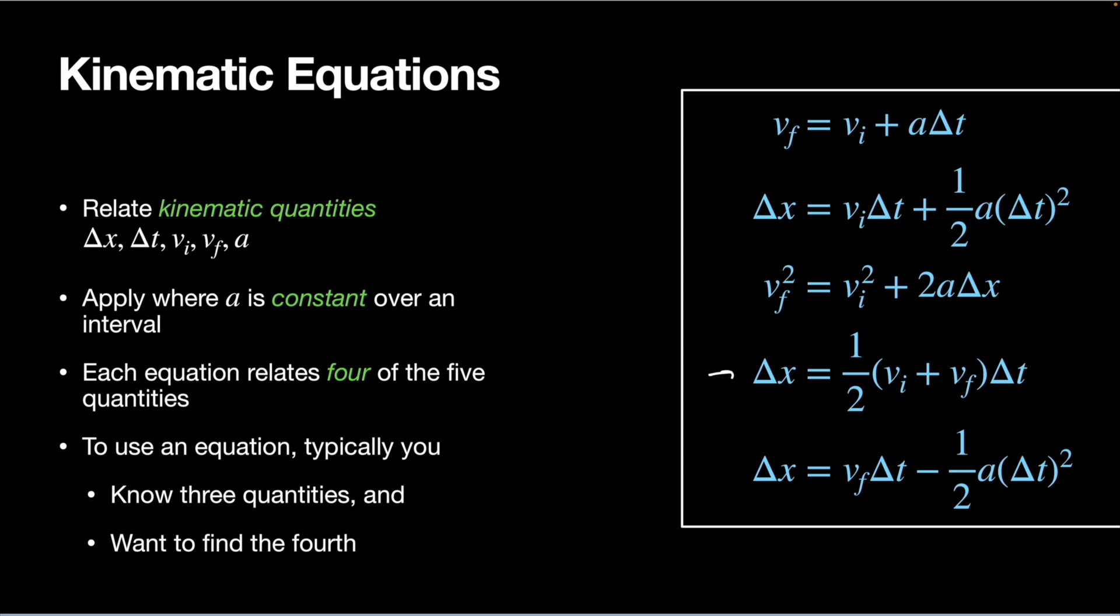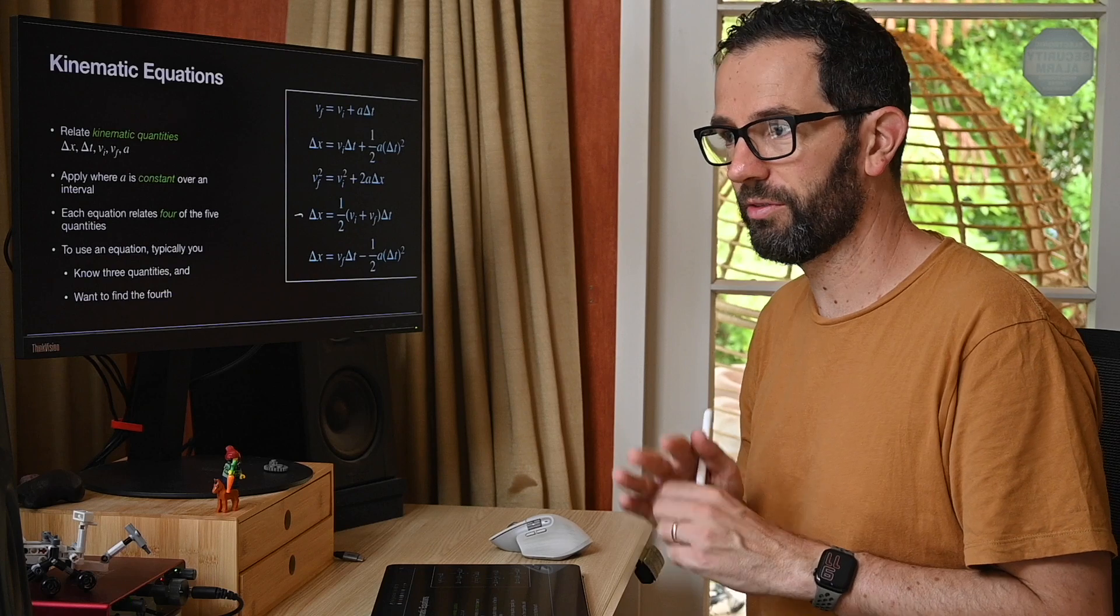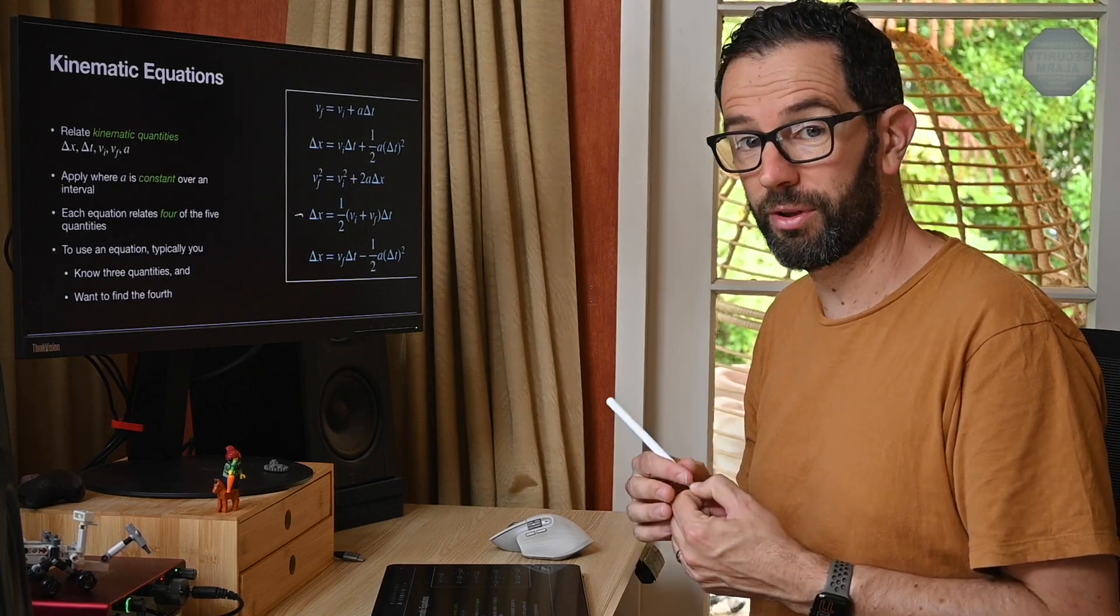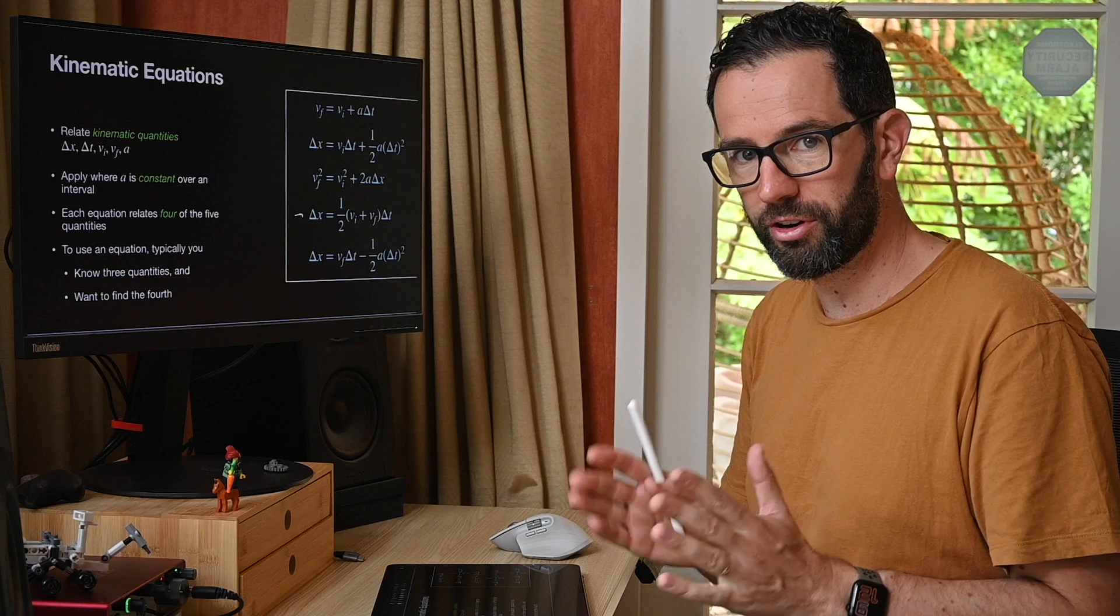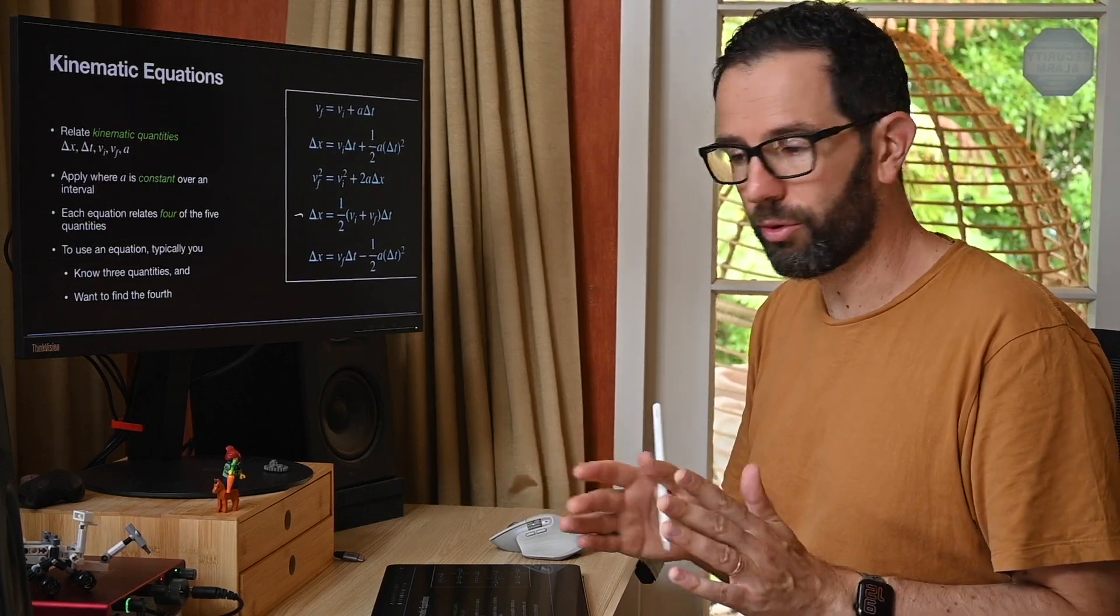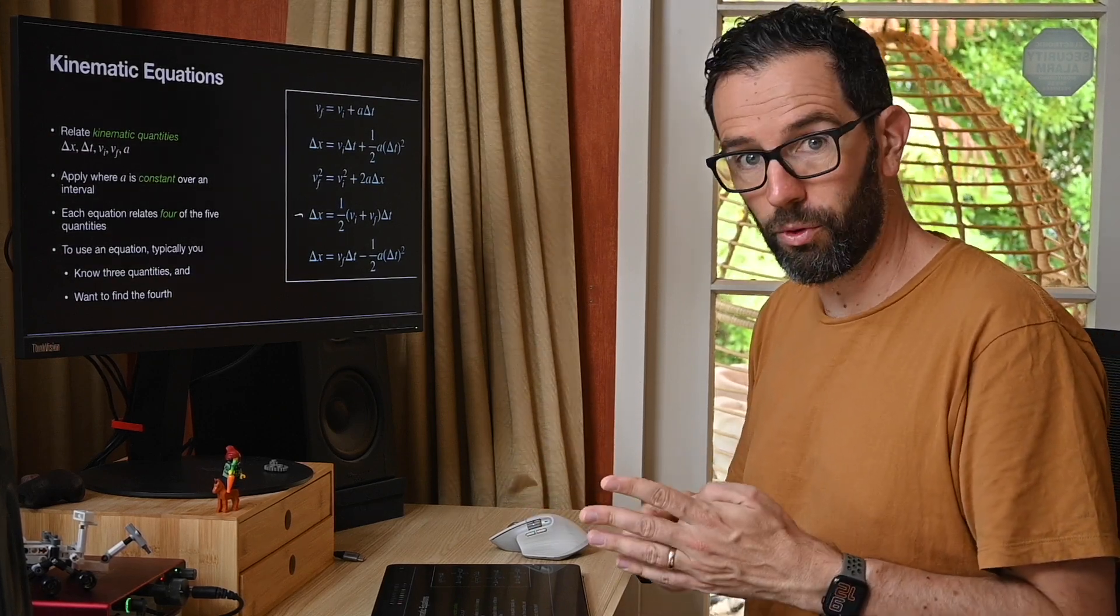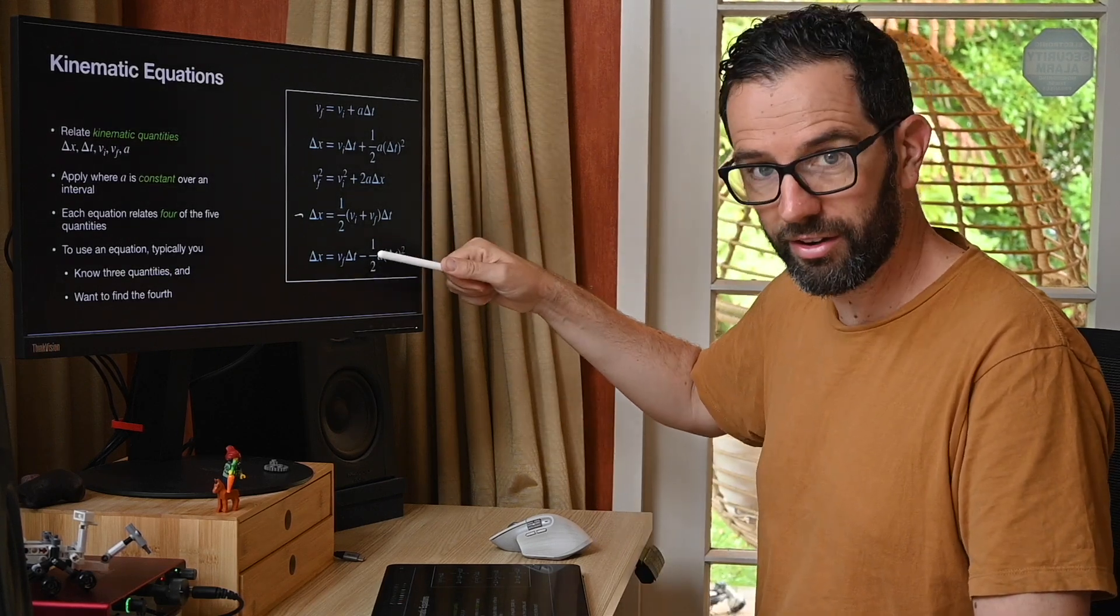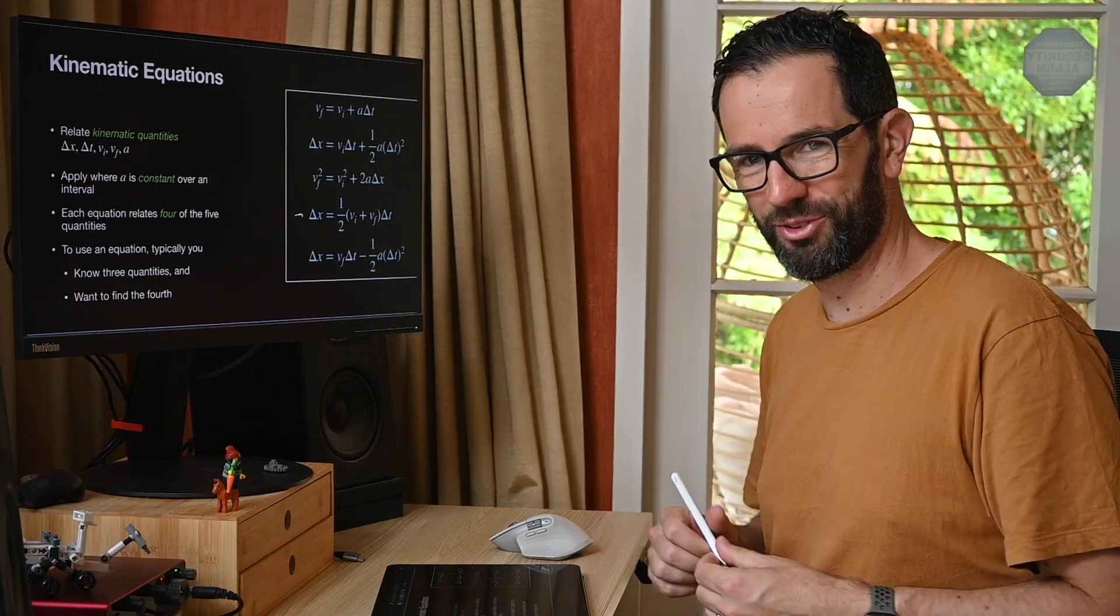So the important points to remember is they relate the five kinematic quantities together. They apply where your acceleration must be constant over the whole interval. As soon as that's not true, then the kinematic equations no longer apply. So one of the first questions you have to ask yourself is, is my acceleration constant? And each one of these equations relates four out of the five variables. So typically, you'll have some kind of word problem or situation where you have three of the quantities through the problem information, and you're trying to find a fourth one. So you'd select the equation that has the four things in it, and you just do a little bit of algebra to find the thing that you want. So in the next video, we're going to run through a bunch of examples. We'll see you then.